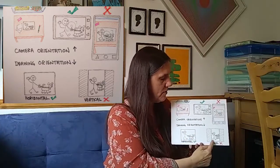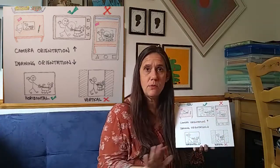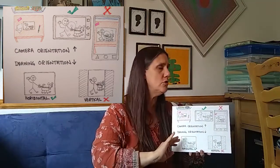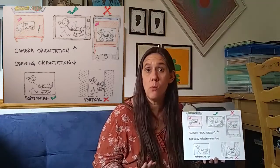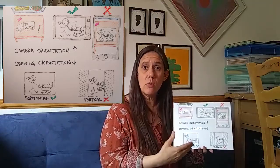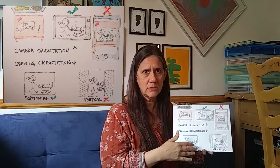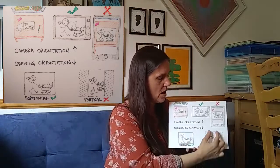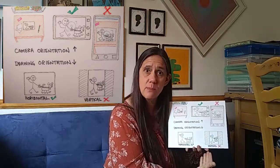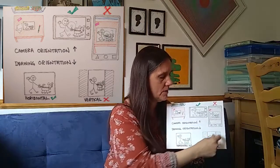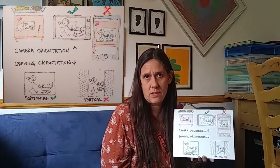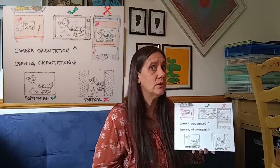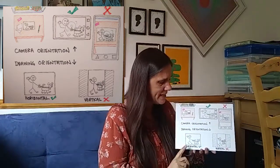If you do your drawings on the vertical — some of you have done this for some assignments, and you're not in trouble — but for your final project you want to animate on the horizontal, not the vertical. Because when you shoot it you get these columns on the side, and you don't want that for your final project. You want your gorgeous animation to fill the screen.